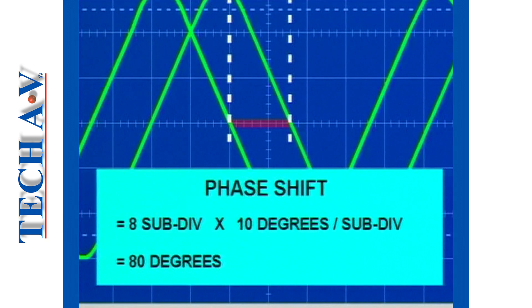In conclusion, channel 1 leads channel 2 by 80 degrees. Or the voltage across the resistor leads the voltage across the capacitor by 80 degrees.